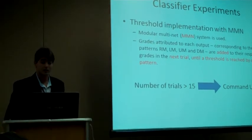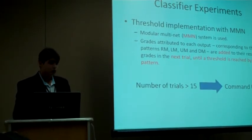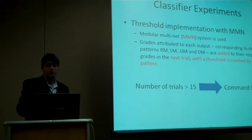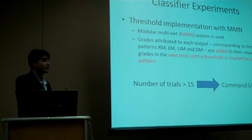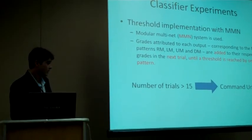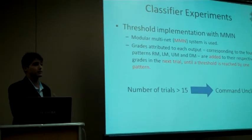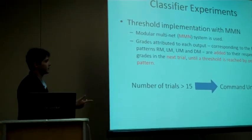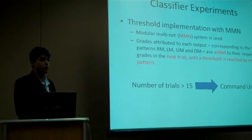The first one is the threshold implementation. We use a modular multinet system to classify each trial. And the grades attributed to each output that corresponds to the four patterns are added to their respective grades in the next trial until a threshold is reached by one pattern. This threshold depends on the user's ability to carry out some similar trials. And if the number of trials exceeds 15, the command is declared unclear, so no robot action is taken.